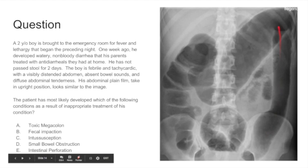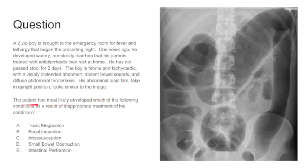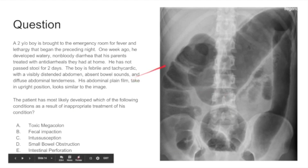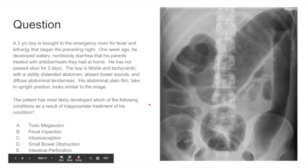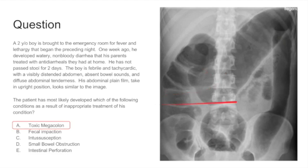This is one of those common signs. The patient has most likely developed which of the following conditions as a result of inappropriate treatment? It seems like he had a diarrhea spell that the parents treated with antidiarrheals. He's febrile, distended, with absent bowel sounds — some warning signs. And then he has this thing right here, which we would call a lead pipe sign.